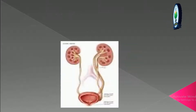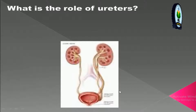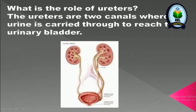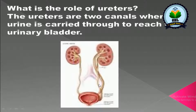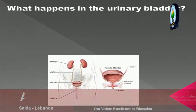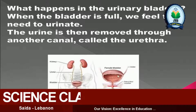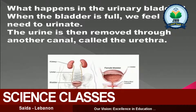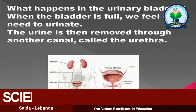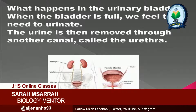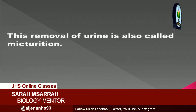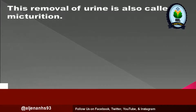We say that the kidneys filter and purify the blood. The ureters are two canals through which urine is carried to reach the urinary bladder. When the bladder is full, we feel the need to urinate, and the urine is then removed through another canal called the urethra.